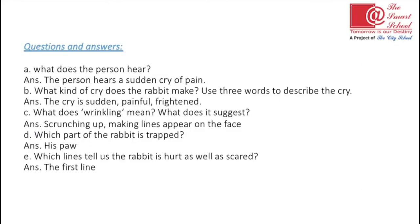Wrinkles appear on the face, and when someone cries they also appear on the face. After completing the words meaning, we will do question answers. Write the heading 'Question Answers' with blue color. Number a: what does the person hear? The child hears the cry of pain — the rabbit was crying — so the answer is: the person hears a certain cry of pain. Number b: what kind of cry does the rabbit make? Use three words to describe the cry. The answer is: the cry is sudden, painful, and frightened.